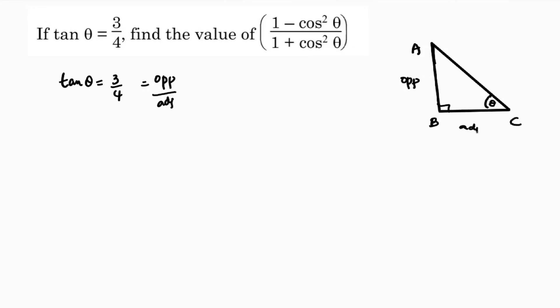BC is opposite, AC is adjacent, and the hypotenuse. So opposite is 3x, adjacent is 4x, and applying Pythagorean theorem, hypotenuse squared equals the sum of squares of the other two sides.